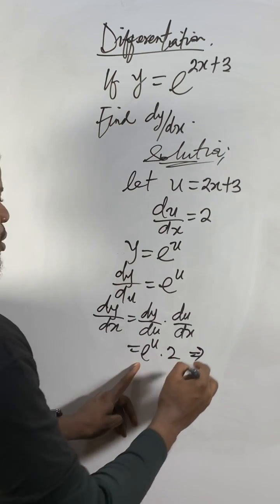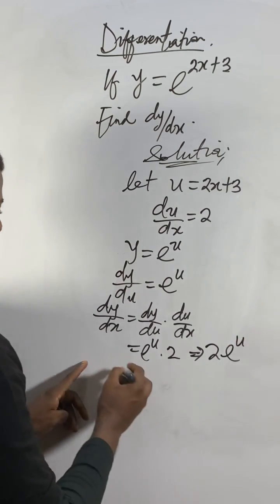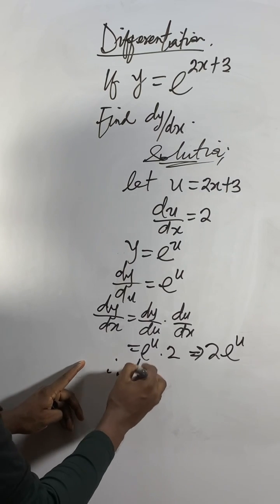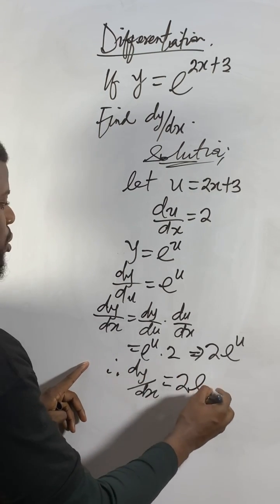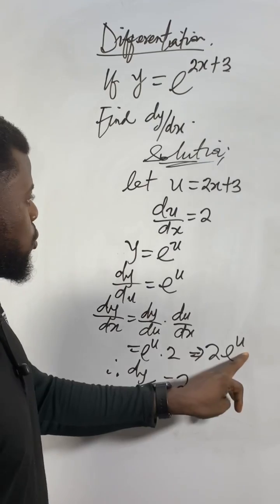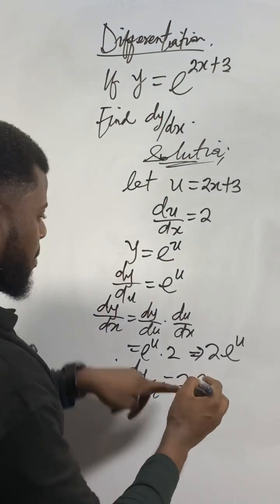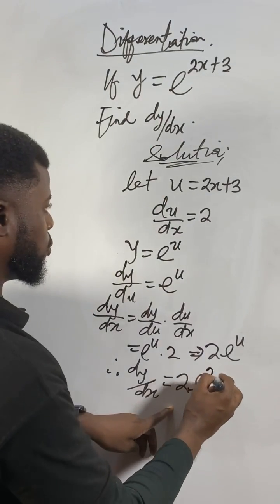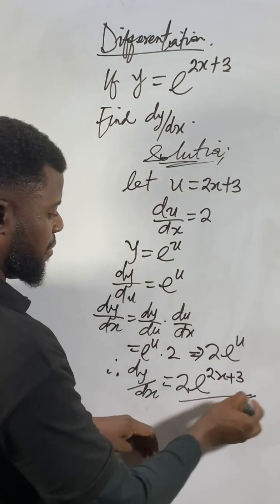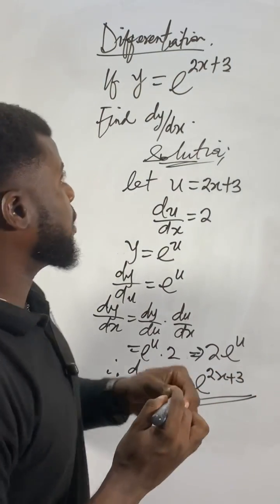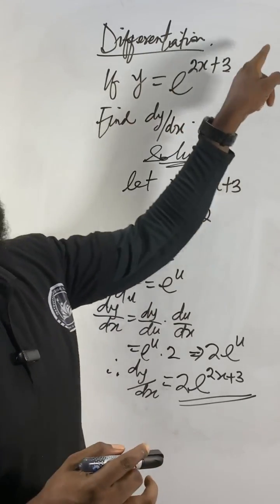So what we get is 2 times e^u, which equals 2e^u. Therefore, dy/dx equals 2e^u. Now we substitute u back — u is 2x plus 3 — so the final answer is 2e^(2x+3). Now you can see the shortcut: just bring down the 2 and keep e to the power of everything inside.